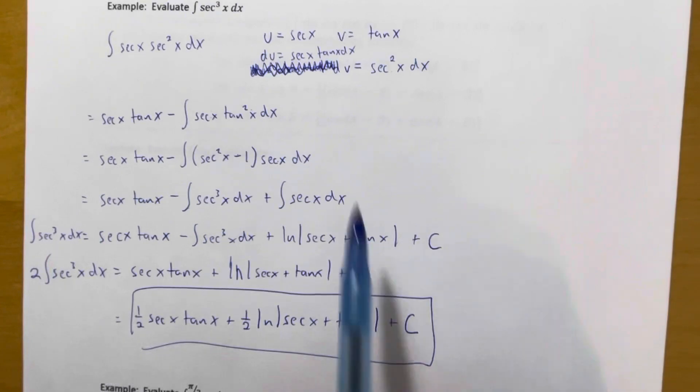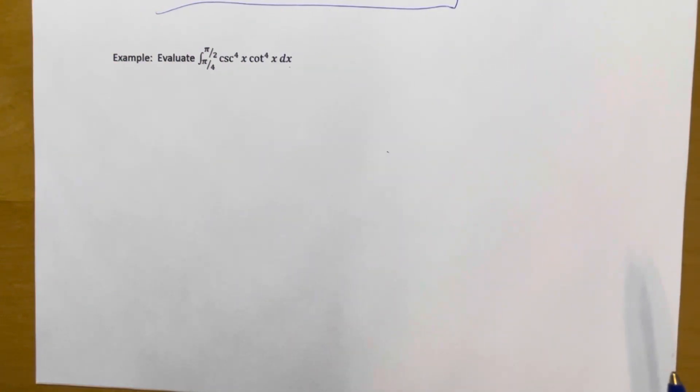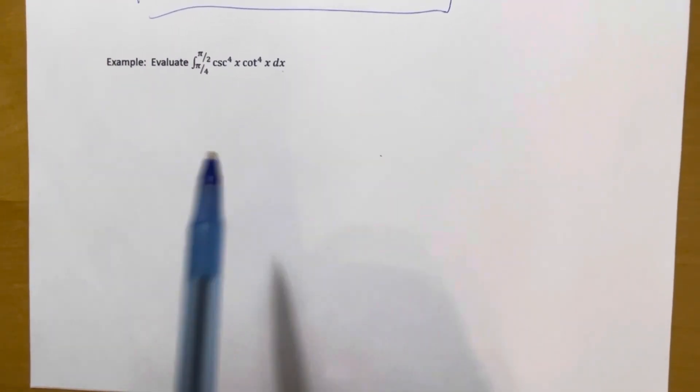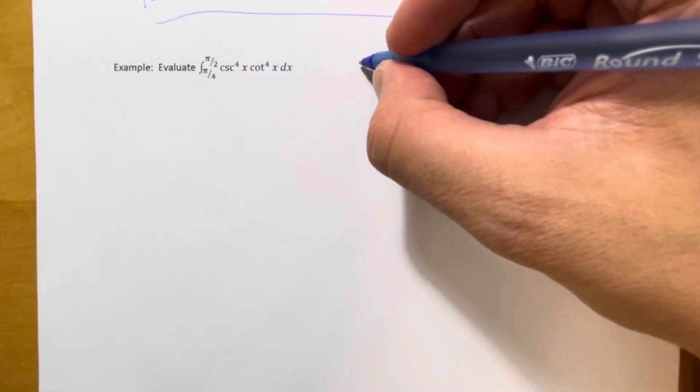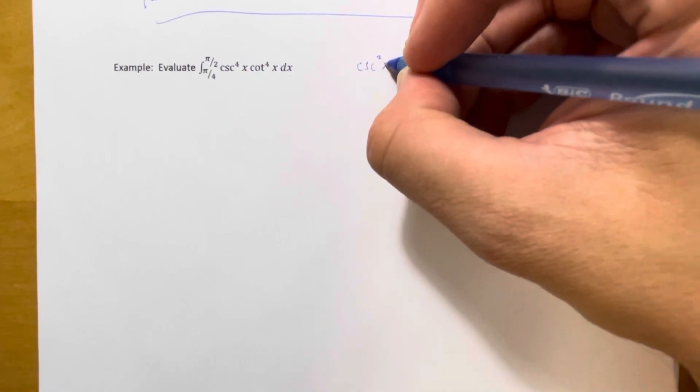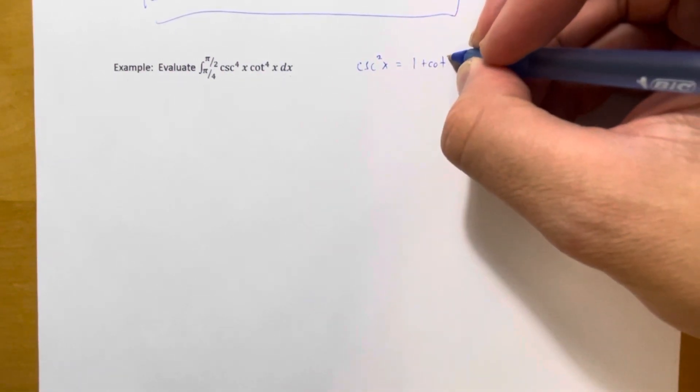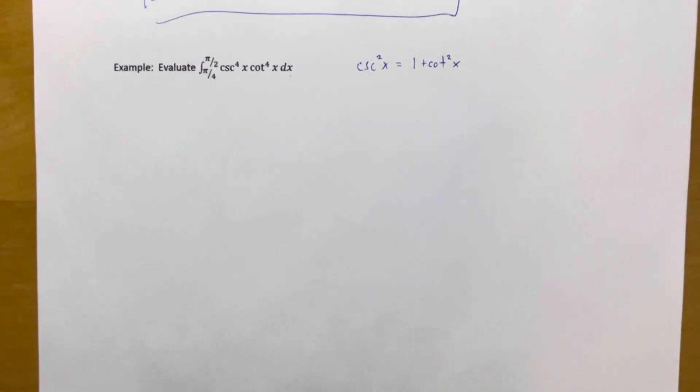Let's look at another one — a definite integral from pi over 4 to pi over 2 with integrand cosecant squared times cotangent to the fourth. This doesn't fit our secant-tangent strategy, but cosecant and cotangent are related by the identity cosecant squared of x equals 1 plus cotangent squared of x, which is analogous to the secant-tangent identity. We can use a very similar strategy.